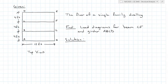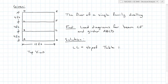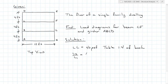Here we're given the support system for a floor in a single-family dwelling. The beams are 12 feet long with 4-foot spacing. Find the load diagram for beam CF and girder ABCD. Since this is a single-family dwelling and no materials are specified, the load is the live load: 40 pounds per square foot from Table 1.4. The span ratio is L2 over L1 = 12 feet divided by 4 feet = 3. Since 3 is greater than 2, this is a one-way system.